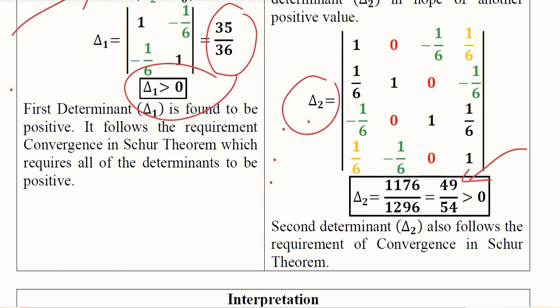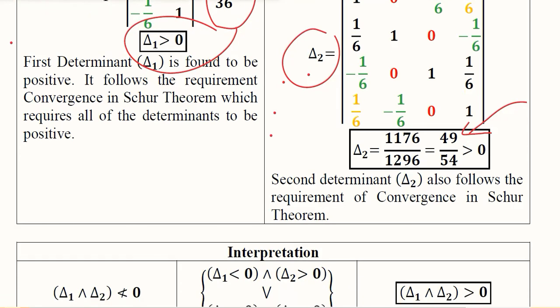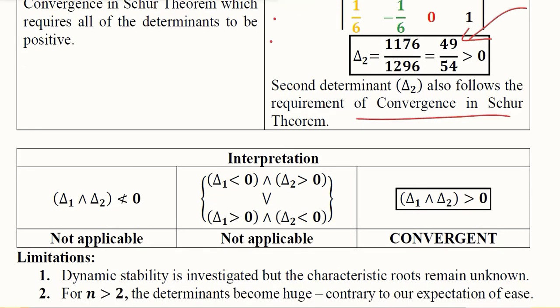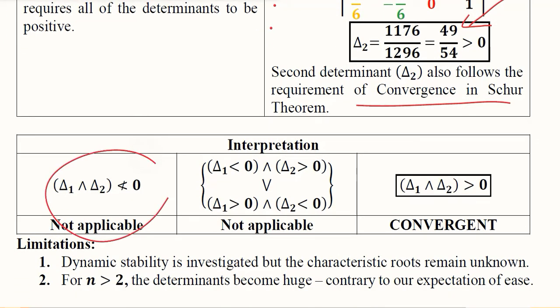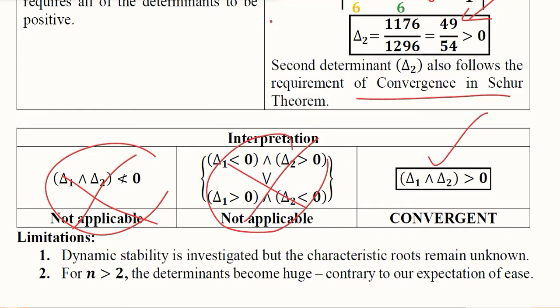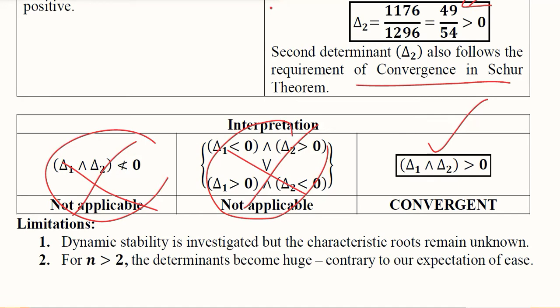Both determinants are positive and it fulfills the condition of convergence in the difference equation's time path. Neither the divergent nor the not applicable case holds because both determinants are positive in nature. So we have a time path which is convergent.